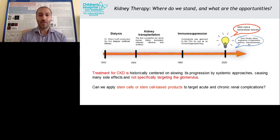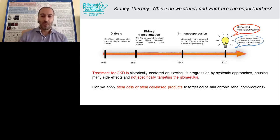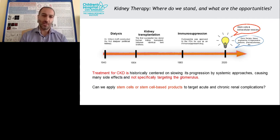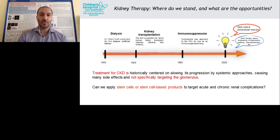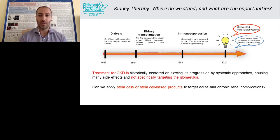Taking a historical look, dialysis and kidney transplantation were both discovered back in the 1940s and 1950s. Only in 1983 did we have the introduction of immunosuppressants, which really enhanced the success of kidney transplantations by providing support against rejection. Treatments for CKD beyond dialysis and transplantation have been centered on slowing progression by systemic approaches such as diuretics or ACE inhibitors, which have many side effects and are not specifically targeting the glomerulus. As of 2020, no new approved therapies are known.